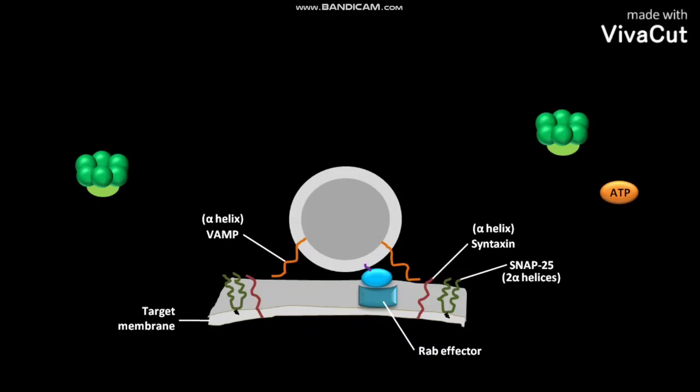The SNAP-25 is attached to the target membrane by a hydrophobic lipid anchor in the middle of the protein. The Syntaxin and SNAP-25 are considered as the cognate t-SNAREs.